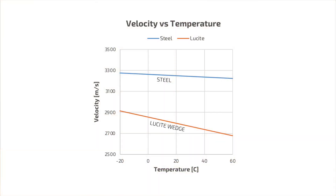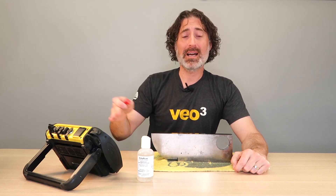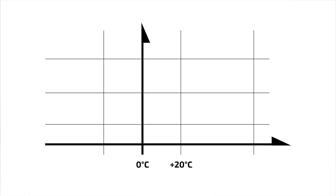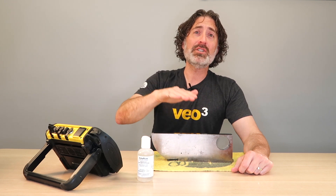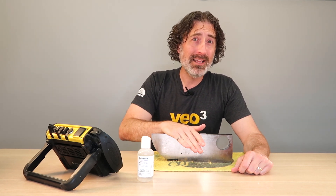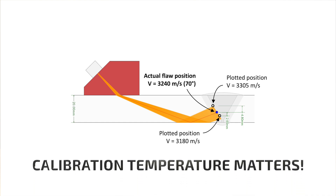The velocity change in steel over that temperature range is not that much. The difference you see in refracted angle is primarily due to the effect of velocity change in the wedge. Knowing the velocity of sound in lucite and shear waves in carbon steel at low and high temperatures, we can put those values into Snell's law, solve for the refracted angles, and get exactly the same results we got in the experiment. The whole takeaway is this: when the temperature changes, it's going to change the sound path a little bit — you probably won't even notice it — but it will change the refracted angle a lot, and that is going to change where you plot your defects.